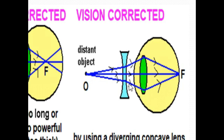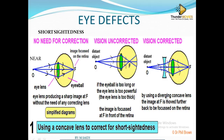This diverging lens bends the light outwards so it becomes bigger. By the time it reaches the eye's lens — which is too powerful — the lens can bend this light back to the retina and the image will be formed onto the retina. The image at point F is moved further back to be focused on the retina.